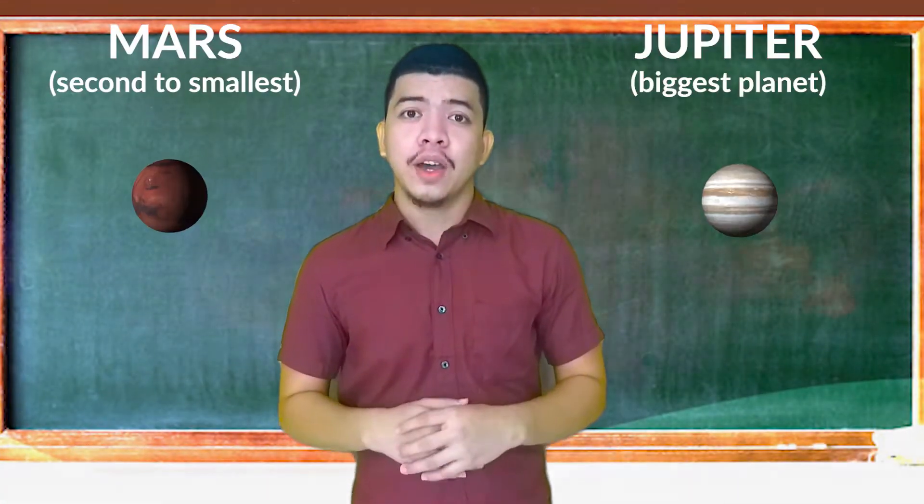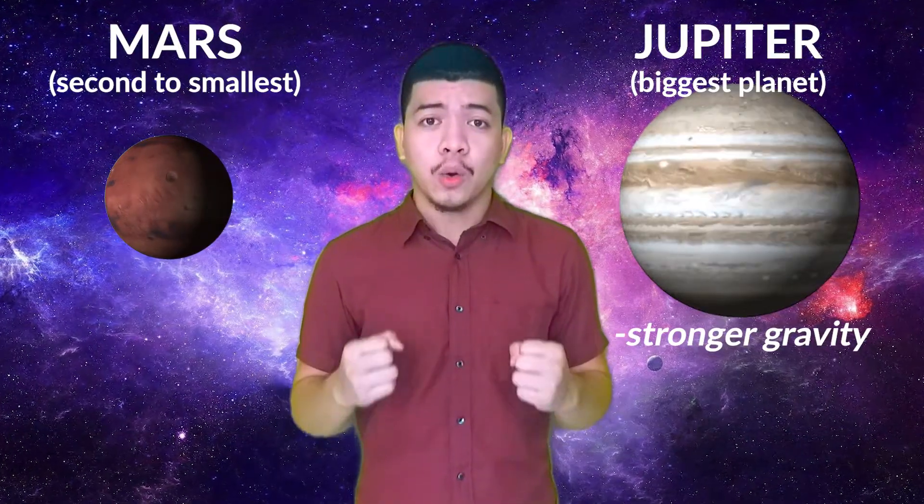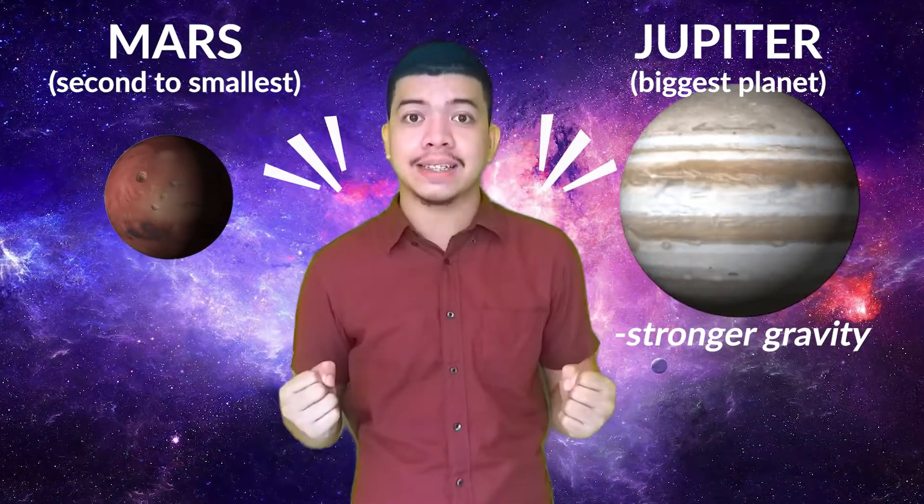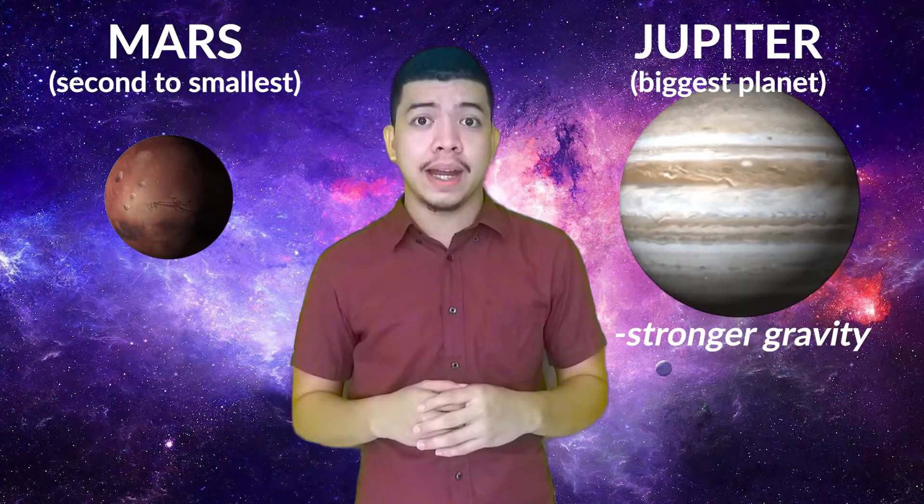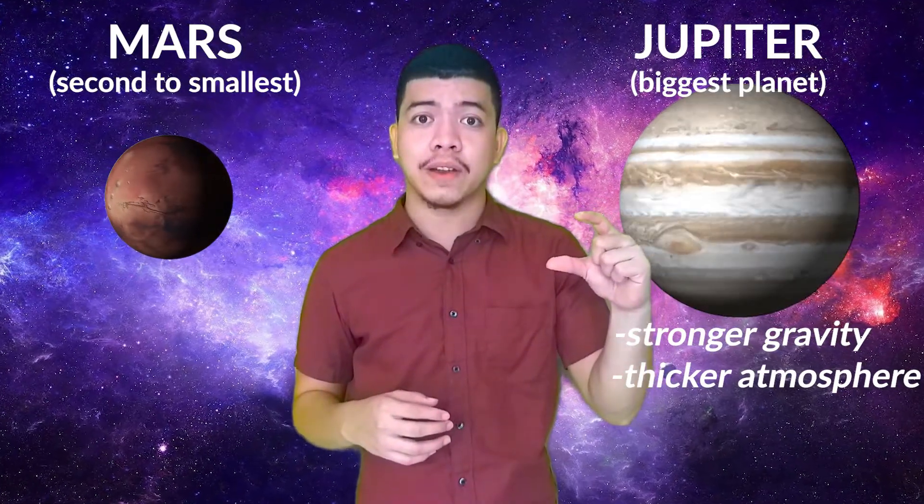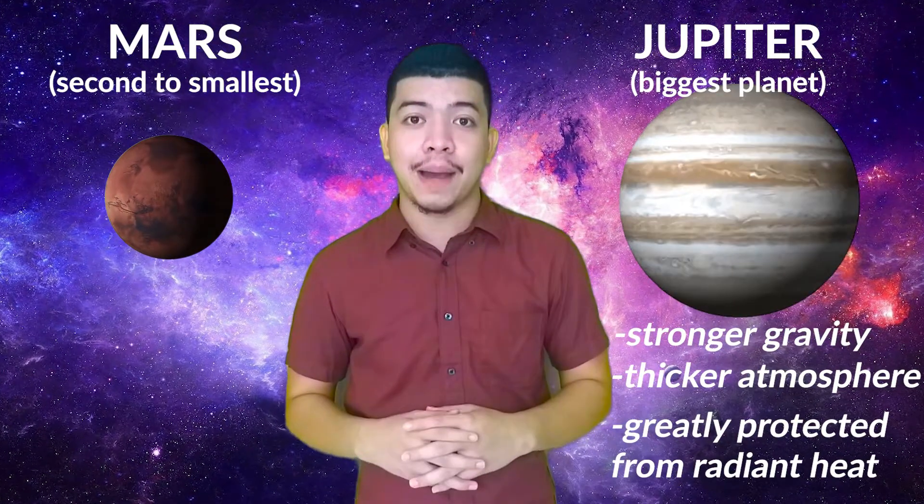Ibig sabihin nun, yung malalaking planets have stronger gravity, which enable them to pull much gases sa paligid nila. Kaya masasabi natin mas makakapal ang kanilang atmosphere at mas matindi ang protection nila laban sa init ng araw.